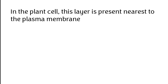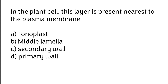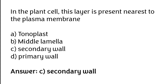In the plant cell, this layer is present nearest to the plasma membrane: A) Tonoplast, B) Middle lamella, C) Secondary wall, D) Primary wall. The correct answer is option C — in the plant cell, the secondary wall layer is present nearest to the plasma membrane.